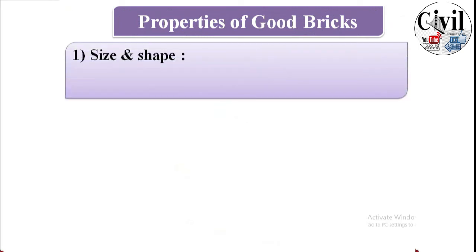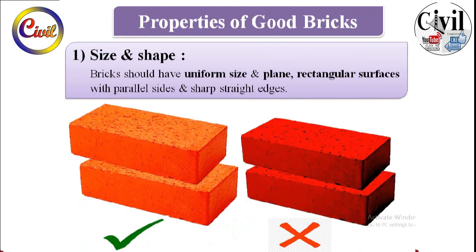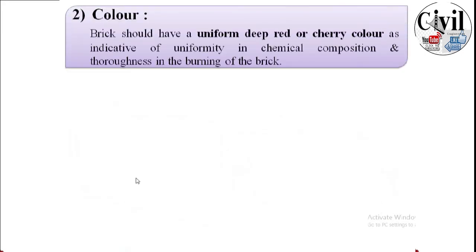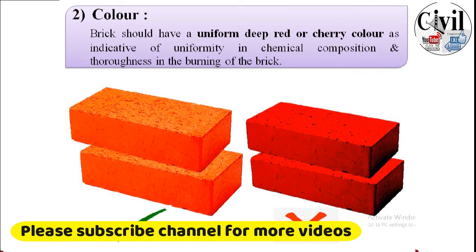Now let's talk about the properties of good bricks. First is size and shape — bricks should have uniform size, a plain rectangular surface, and sharp straight edges. Second is color — bricks should have a uniform deep red or cherry color, which indicates proper chemical composition and thorough burning.